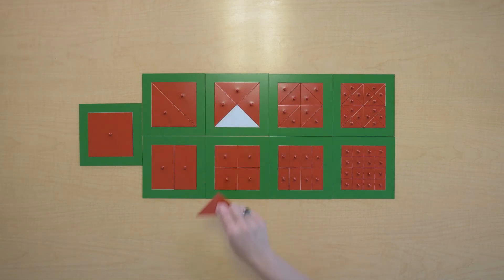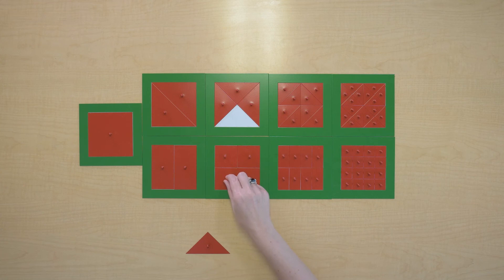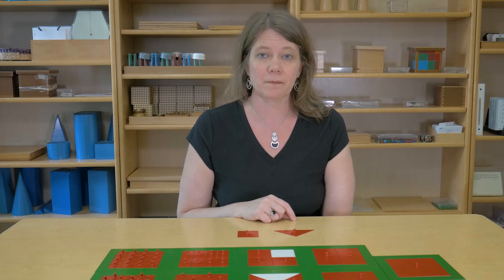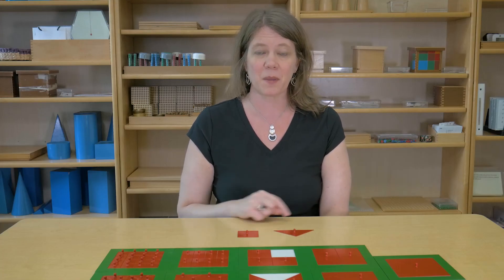So this one piece is one of four that make up that whole inset. And this one piece is also one of four. So these two pieces are equivalent. They take up the same amount of space.